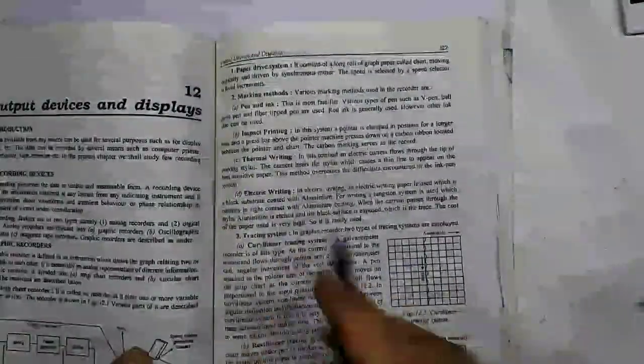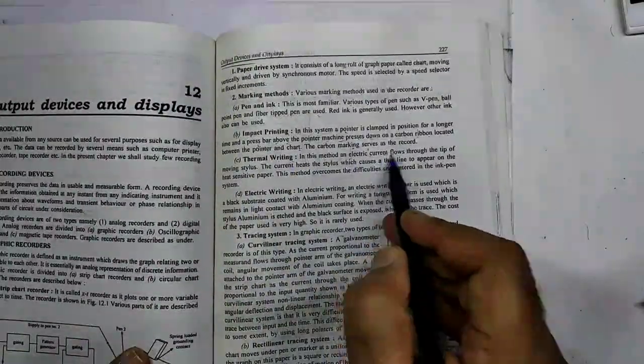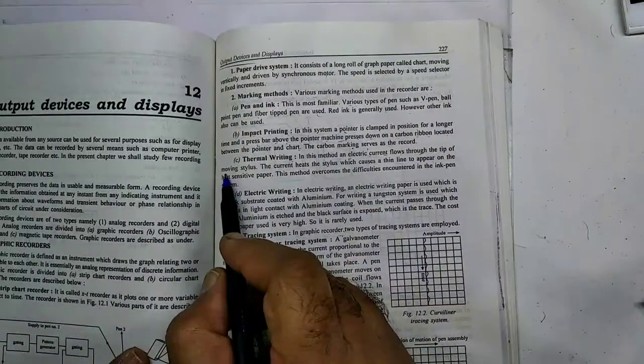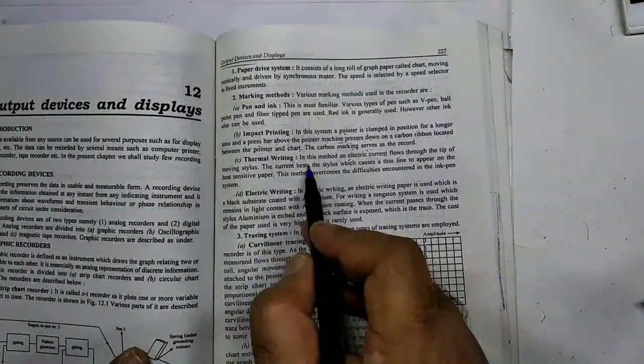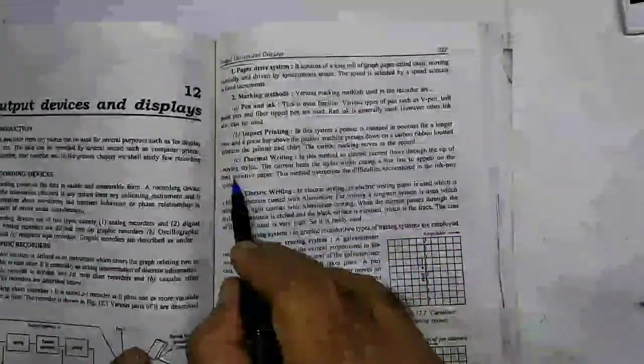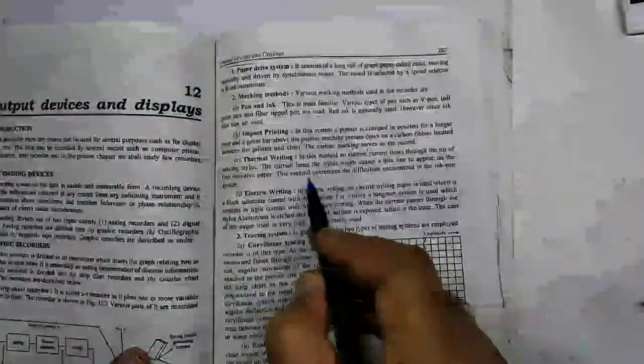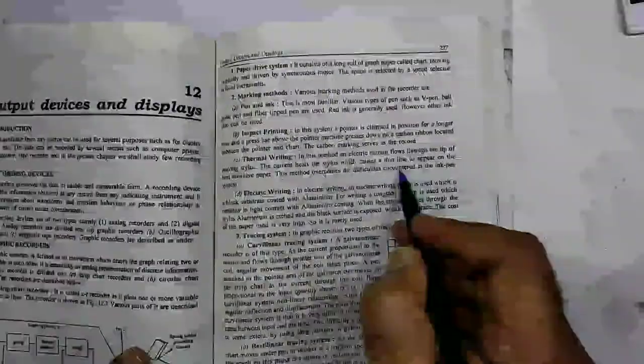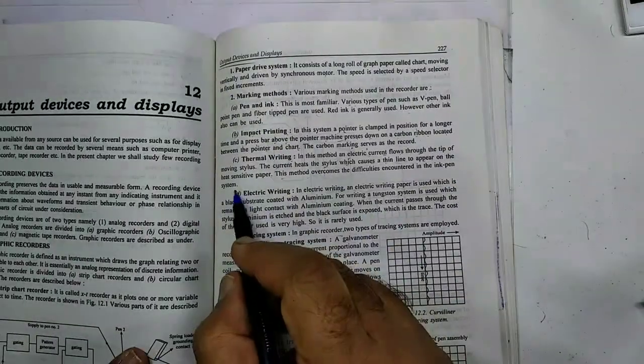Next is thermal writing. In this method, an electric current flows through the tip of a moving stylus. The current heats the stylus which causes a thin line to appear on the heat sensitive paper. This method overcomes the difficulties encountered in the ink pen system.